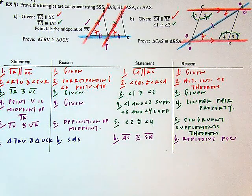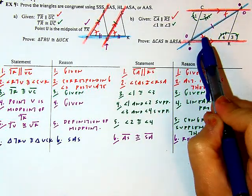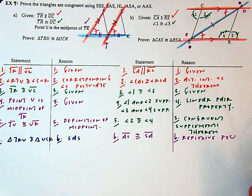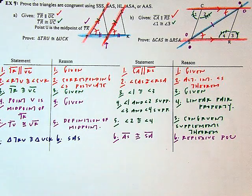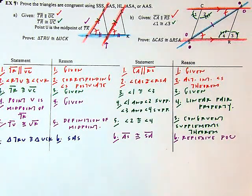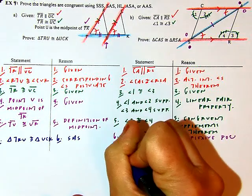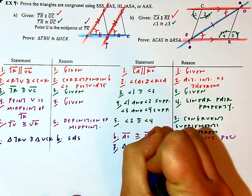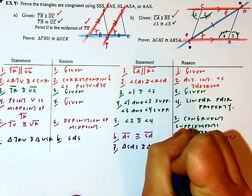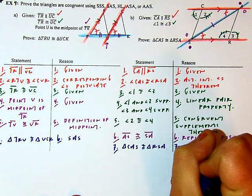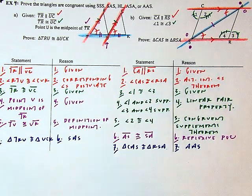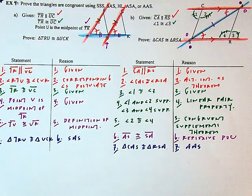Now I can reach my conclusion. I have two pairs of corresponding angles that are congruent and one pair of corresponding sides that are congruent — not the included pair. Triangle CAS is congruent to triangle RSA — angle-angle-side. I hope this lecture has been helpful, especially with reinforcing the style of proof we've been seeing in this unit. Have a wonderful rest of your day.